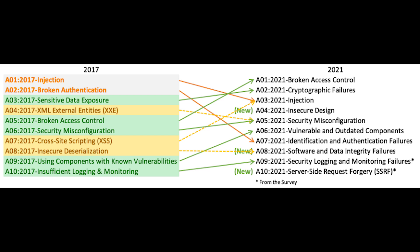Next, we have software and data integrity failures. Software and data integrity failures relate to code and infrastructure that does not protect against integrity violations. Many applications now include auto-update, where updates are downloaded without sufficient integrity verification and applied to the previously trusted application. Attackers can potentially upload their own updates to be distributed and run on all installations. You have to use digital signatures and ensure you're using trusted repositories that are vetted. Ensure there aren't any components with known vulnerabilities and apply a review process.